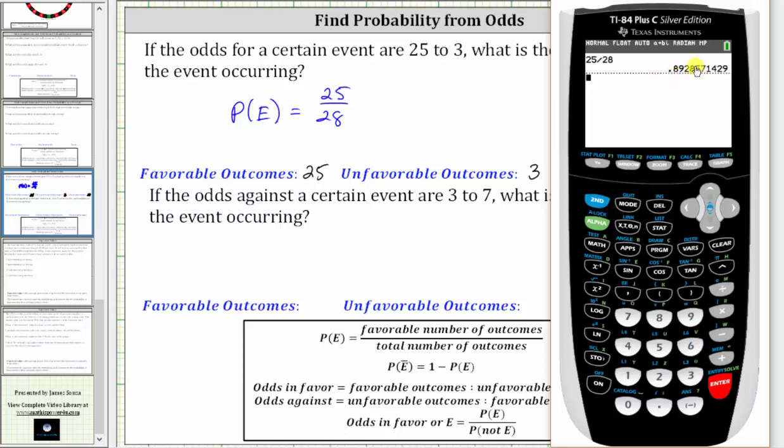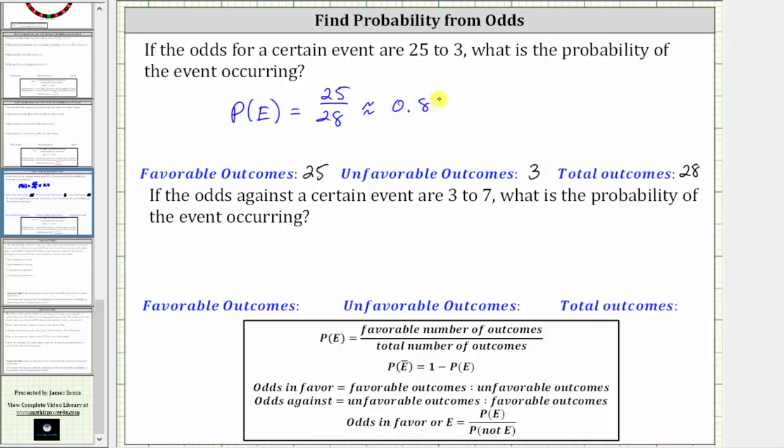Notice how we have a five in the fifth decimal place, which means you round up, which as a percentage would be 89.29%.